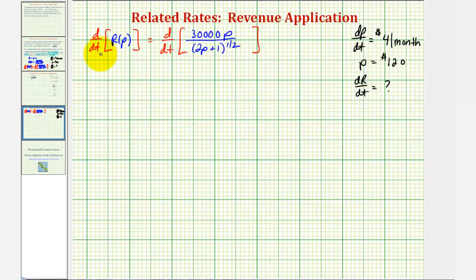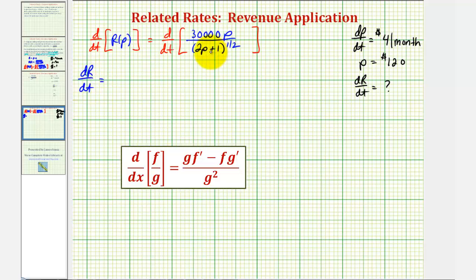The derivative of r with respect to t would just be dR dt. And the right side, we'll have to apply the quotient rule. We'll start with the denominator, which would be the denominator squared. So we'd have the quantity 2p plus 1 to the first power. And now for the numerator, we'll have the denominator times the derivative of the numerator, which would be 30,000 minus